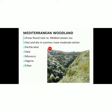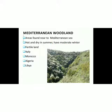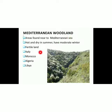Next is Mediterranean woodland. It is an area found near the Mediterranean Sea. It is hot and dry in summer and has a moderate winter. The area is fertile with a lot of greenery. Mediterranean woodlands are mostly found in Italy, Morocco, Algeria and Libya.